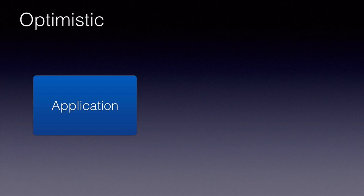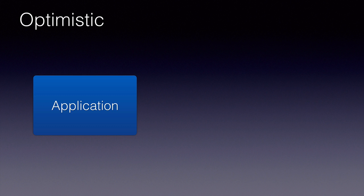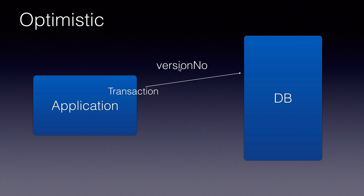Optimistic locking means a specific record in the database table is open for all the user sessions or transactions. While using optimistic locking, we will not be locking any of the database records. Instead, every time the transaction reads some data, it will also read the version number or timestamp.